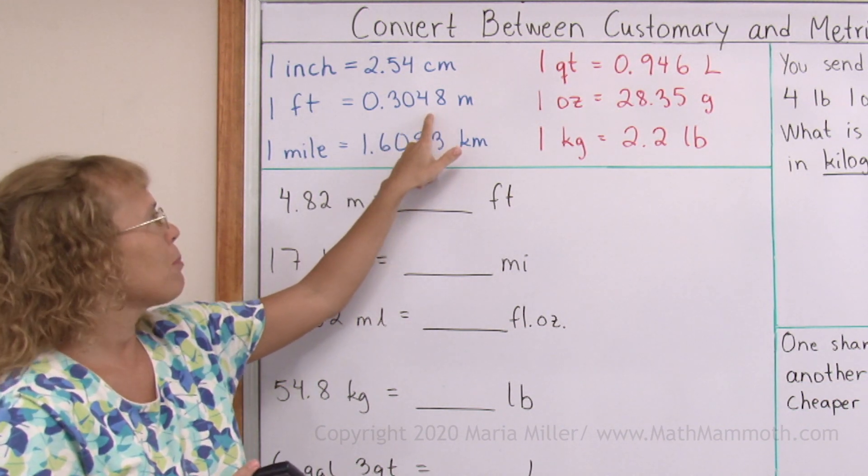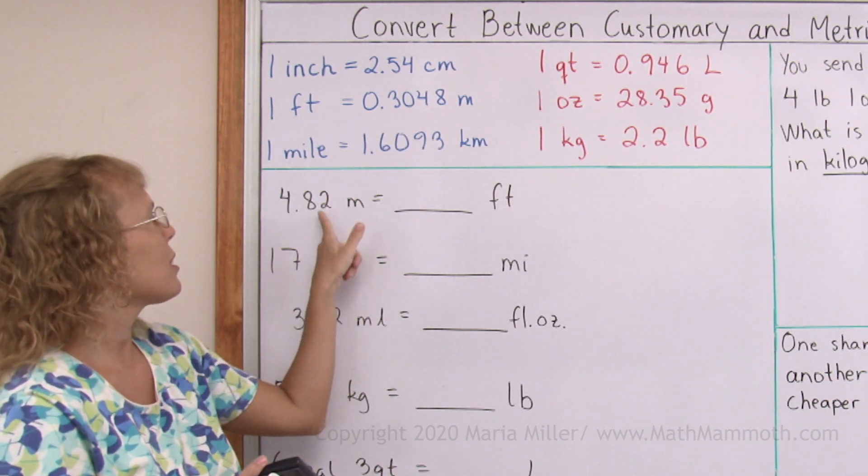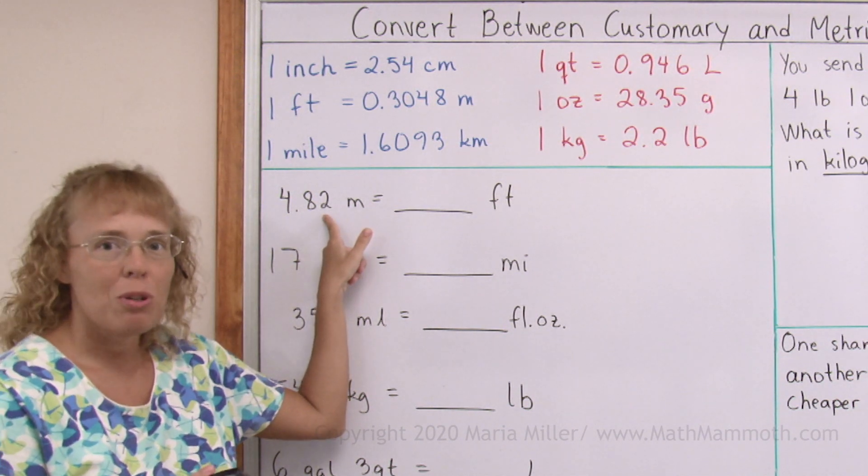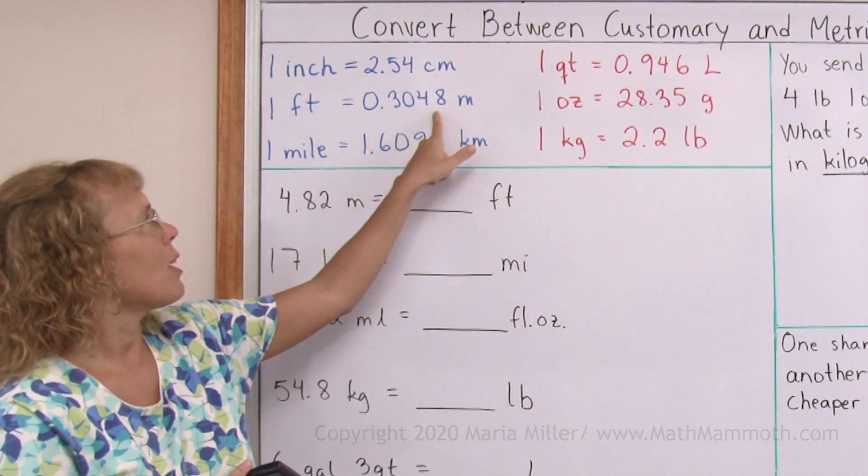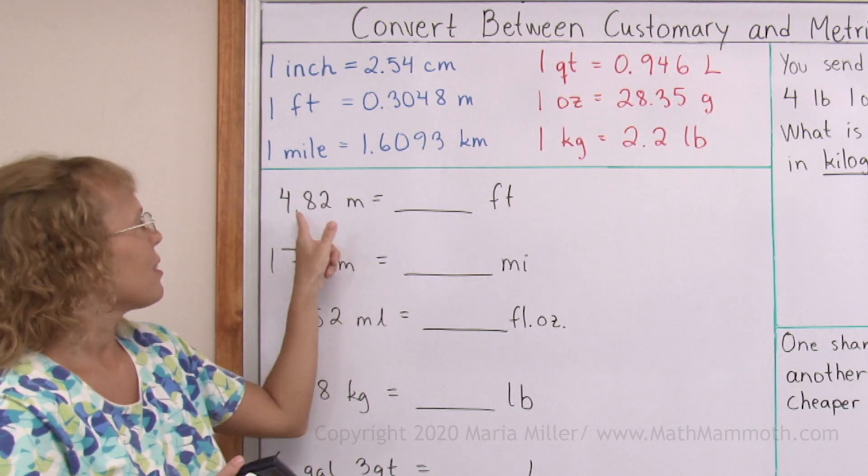I have to get a bigger number here than 4.82. And my decimal number here, the conversion factor, if I multiply by it, if I take this times this, I would get a smaller number as a result, because this number is less than 1. So I will divide by it. This divided by that.